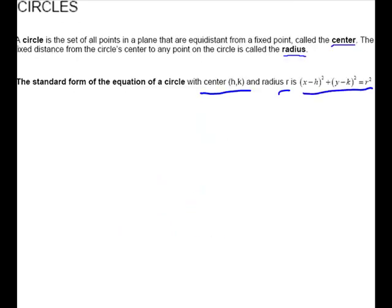Next we're going to look at circles. A circle is the set of all points in a plane that are equidistant from a fixed point called the center. The distance from the circle center to any point on the circle is called the radius, so from the center to the outside edge of the circle. The standard form of the equation of a circle with center (h, k) and radius r is: (x - h)² + (y - k)² = r².